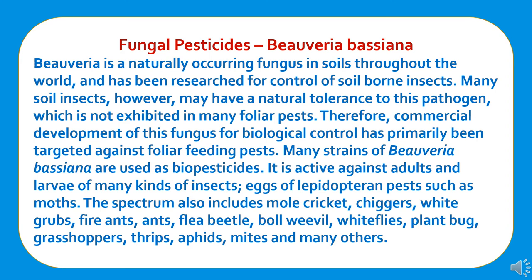Beauveria bassiana is a naturally occurring fungus in soil throughout the world and has been researched for control of soil-born insects. Many soil insects may have a natural tolerance to this pathogen, which is not exhibited in many foliar pests. Therefore, commercial development of this fungus for biological control has primarily been targeted against foliar feeding pests. Many strains of Beauveria bassiana are used as biopesticides. It is active against adults and larvae of many insect species, eggs of lepidopteran pests such as moths, and its spectrum includes mole crickets, chiggers, white grubs, fire ants, flea beetles, boll weevils, whiteflies, plant bugs, grasshoppers, thrips, aphids, mites, and many others.